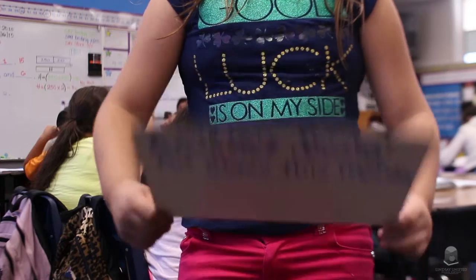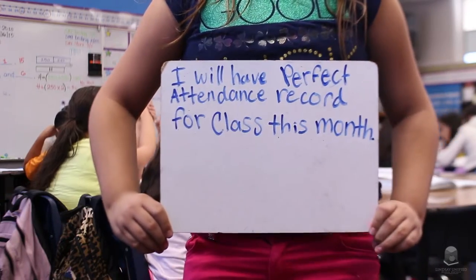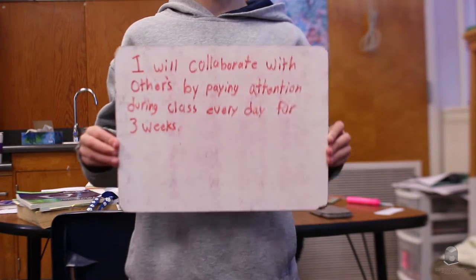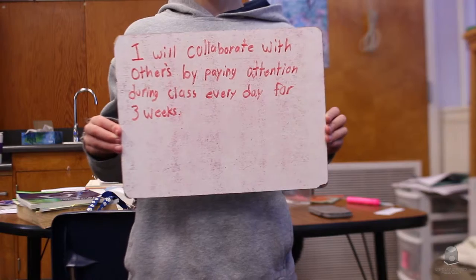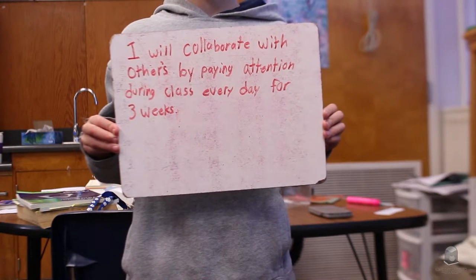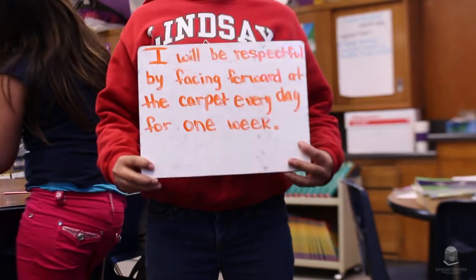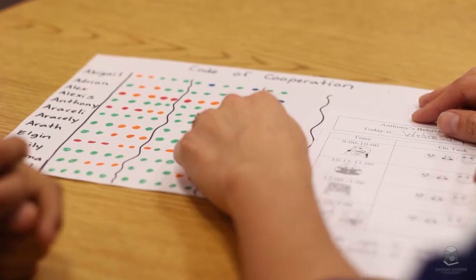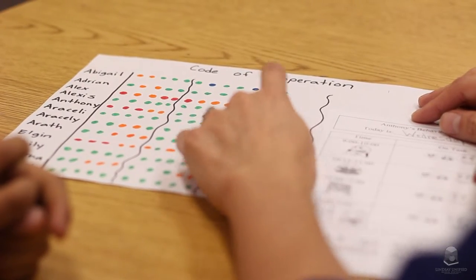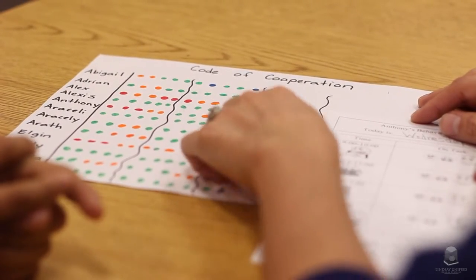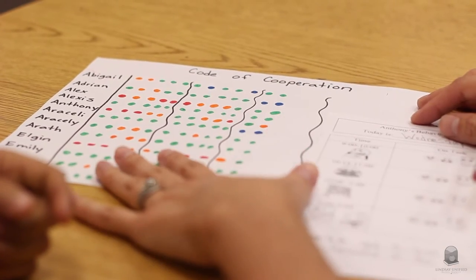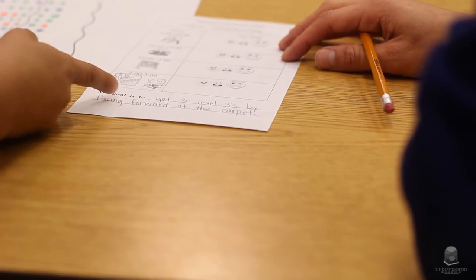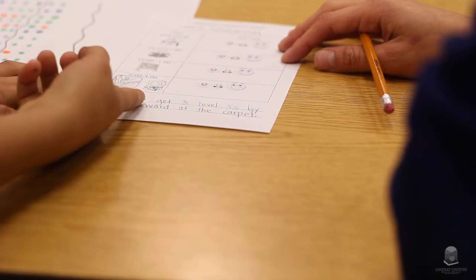Goals that do not meet the SMART criteria may lack focus or may not be tied to a realistic and rigorous timeline. If we do not adhere to this model, it is likely that our goals will not be efficient in helping us achieve our overall vision. Whenever we do set a goal, we should use the trend data that we have collected through the monitoring of our shared vision and our code of cooperation to set a goal that fits the SMART criteria.